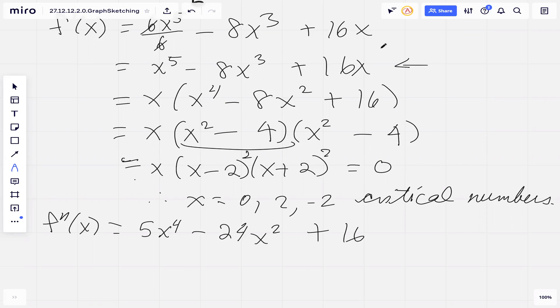We can plug in our critical numbers into our second derivative to determine the concavity at that point. When x equals zero, our second derivative equals 16, which is greater than zero, so concave up. The function is concave up at x equals zero, so most likely a minimum at x equals zero.